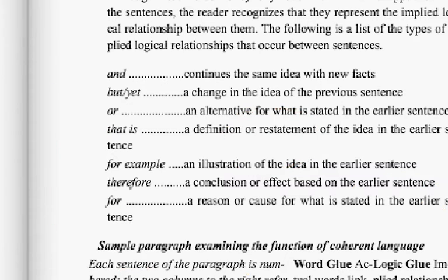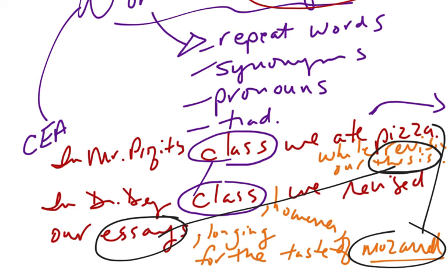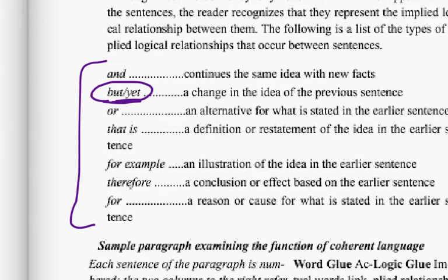So if you look, these are the seven logical reasons. We don't usually write these words in between the sentences, but they represent the logic. They're implicit. And the relationship between these two sentences is marked by but yet. So we didn't write but yet in between these two sentences, but this is the implication. A change in the idea of a previous sentence.